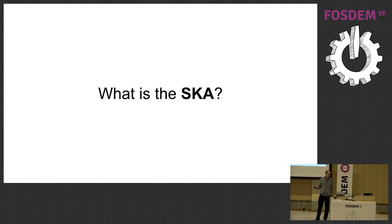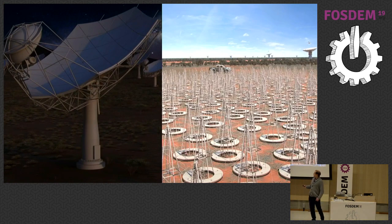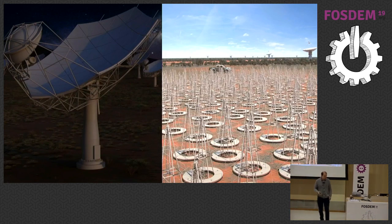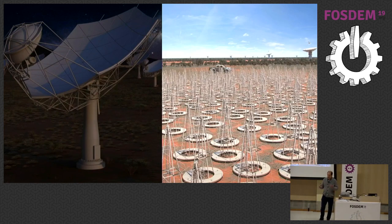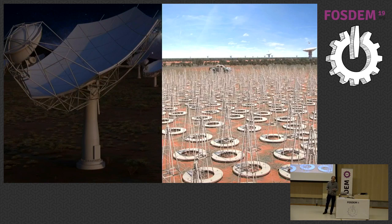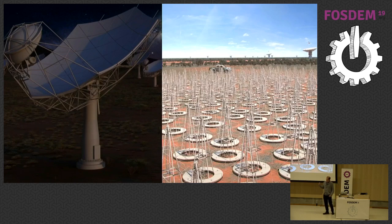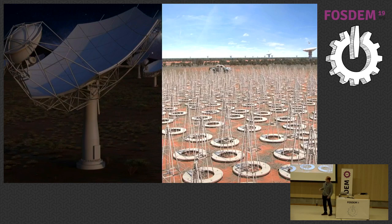So what is the SKA? Here I've got two artist impressions. It's a radio telescope looking at the sky, trying to take better pictures. It's currently coming towards the end of the design phase, hoping to start construction in April 2020. There are two locations. The left-hand side is mostly to do with mid-frequency — this is called SKA1 Mid, planned to be in South Africa. There are about 200 dishes planned, all joined together to form one radio telescope.